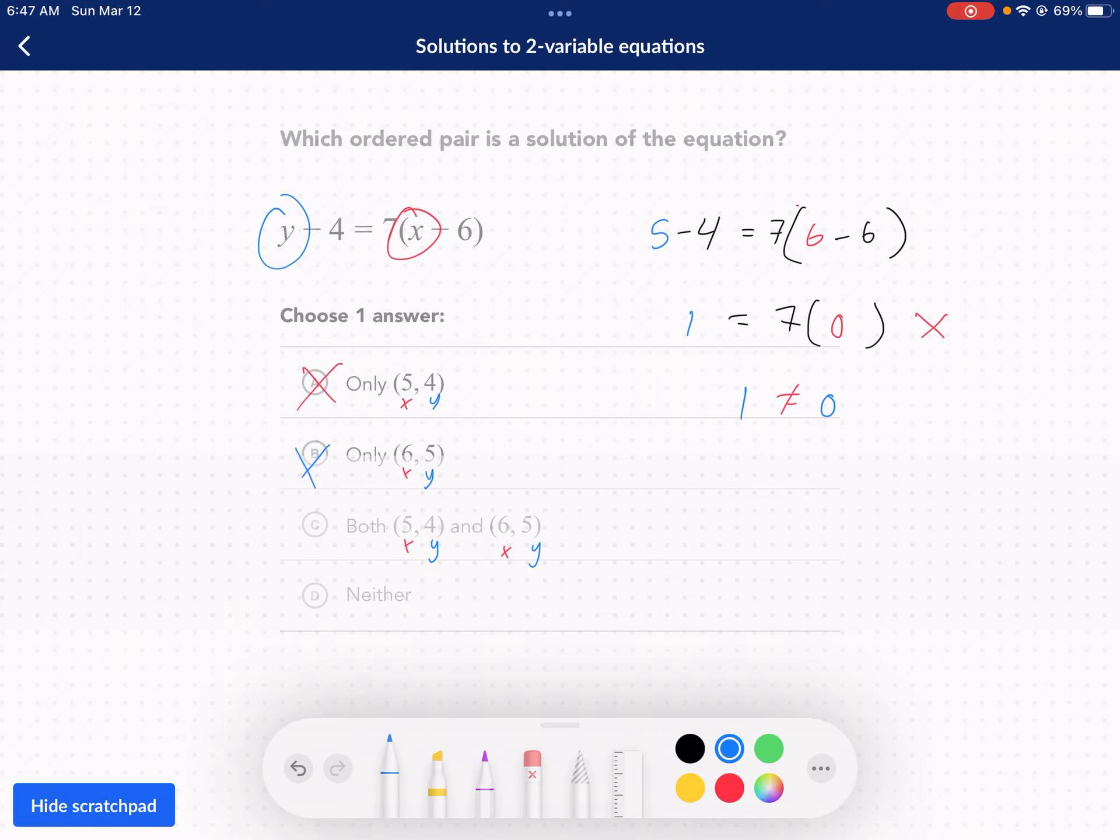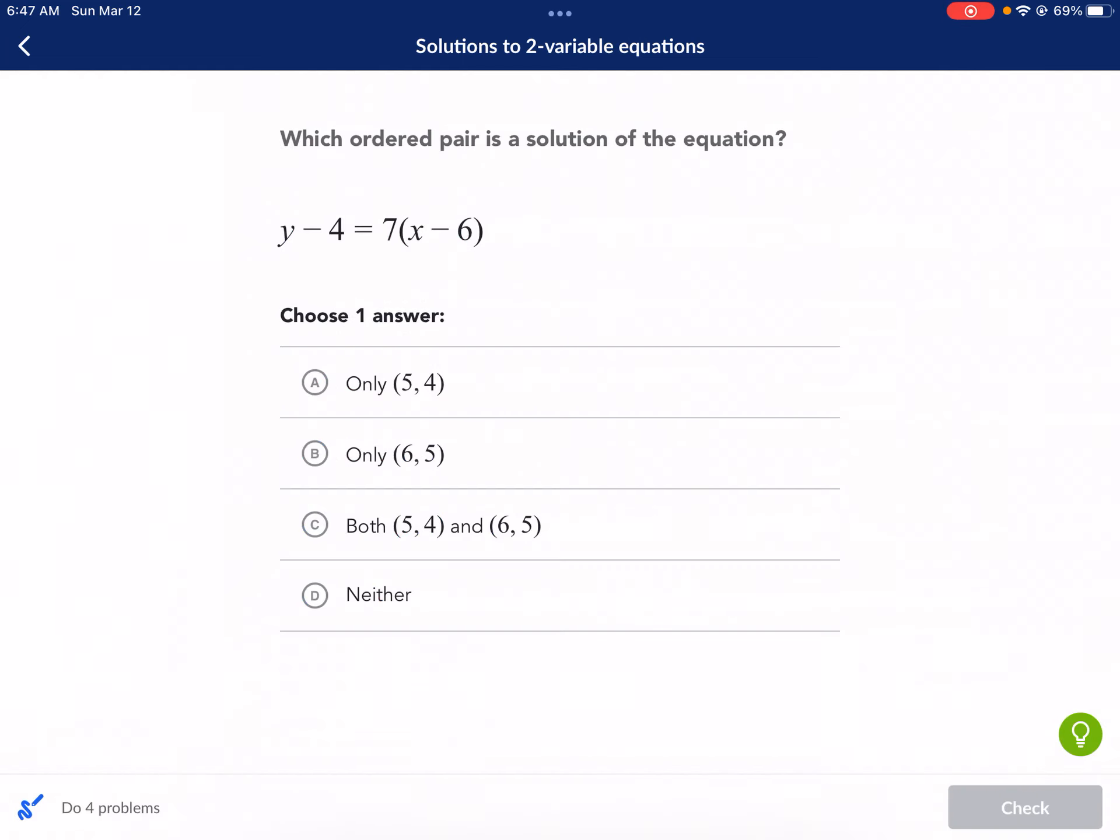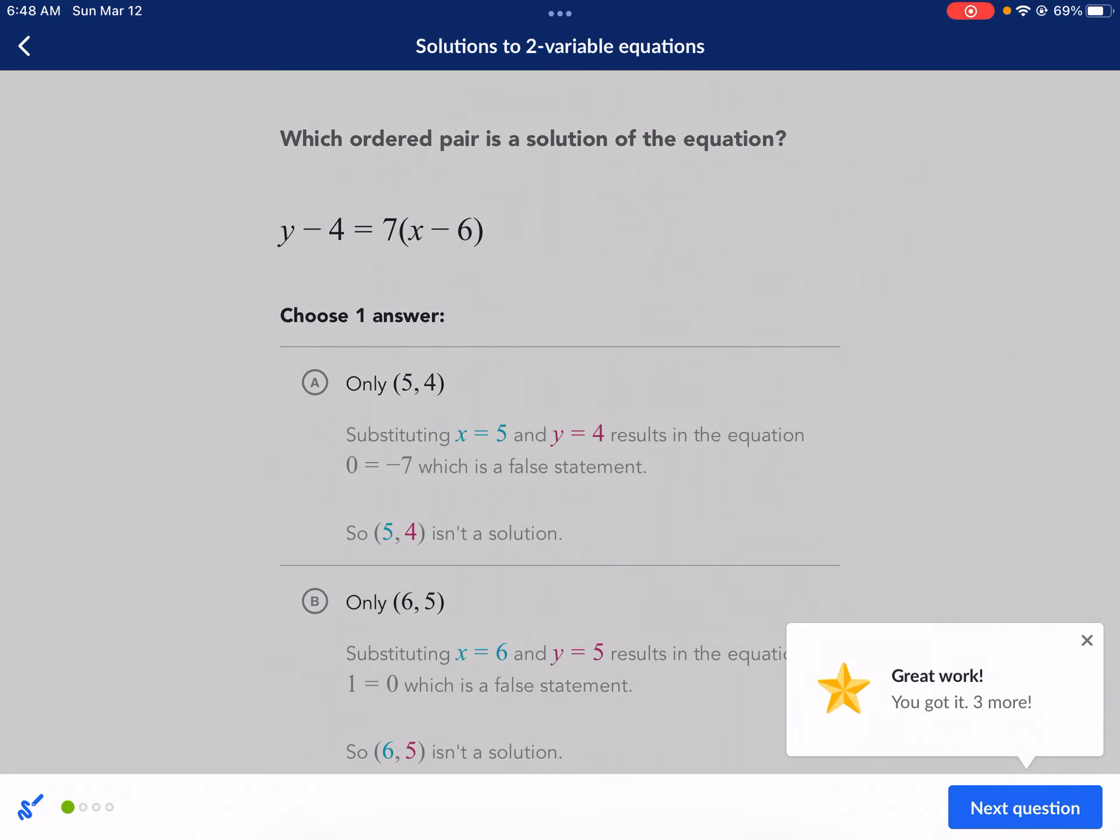So now we need to try, oh look, C is saying both (5, 4) and (6, 5). Neither one of those is a solution. So we're going to choose neither for this first problem. Because none of those options work. And let's move on to the next one.